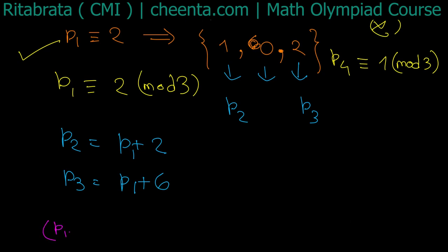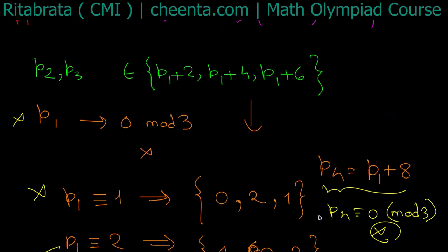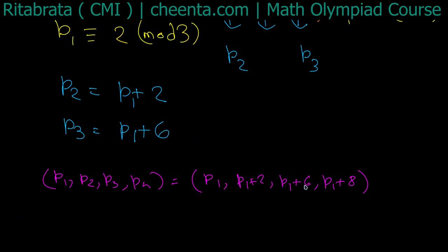So this is an important observation. We have p1, p2, p3, p4 is just p1, p2 is p1 + 2, p3 is p1 + 6, p4 is p1 + 8. Now modulo 3 okay, now we need to check the modulo 5.